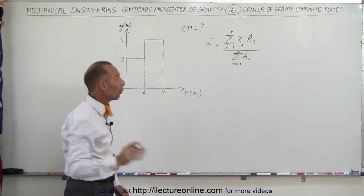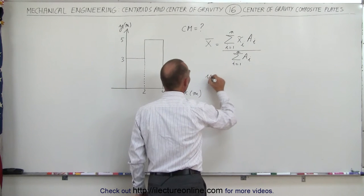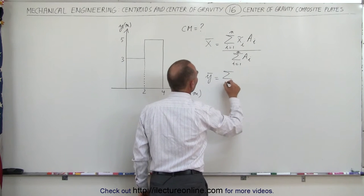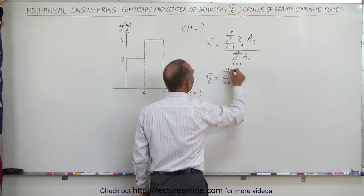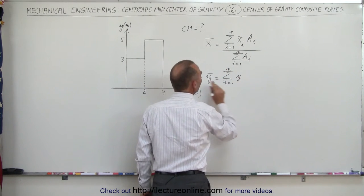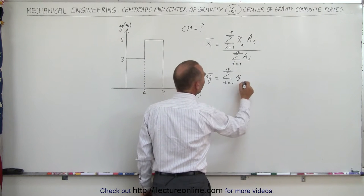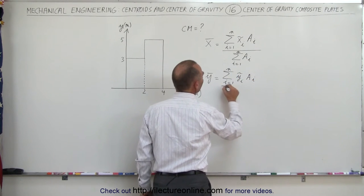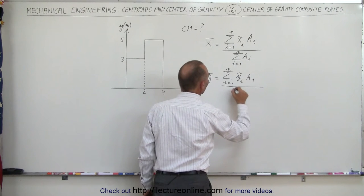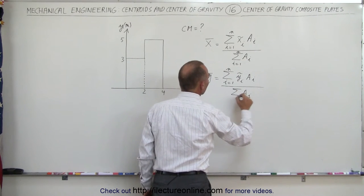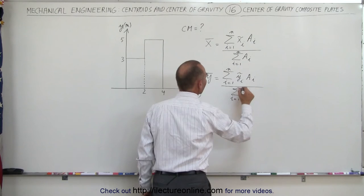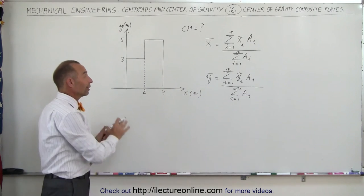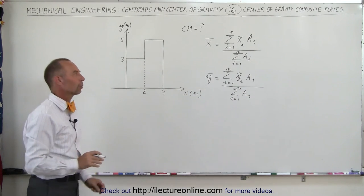We do the same for the y coordinate. y-bar, the y coordinate of the center mass, equals the sum from i equals 1 to n of the y coordinate of each individual piece times its area, divided by the sum of the areas of each individual piece from 1 to n. In this case, there are only 2 pieces.